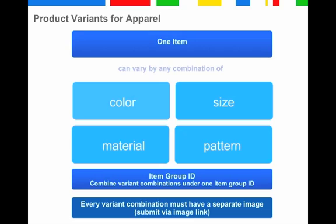Providing variants is only required for apparel but not limited to it—you can provide variants for other products as well. Think about how nowadays digital cameras or notebooks often come in different colors from pink to blue. For variants of products other than apparel and its subcategories, you don't need to submit a separate image or item group ID.